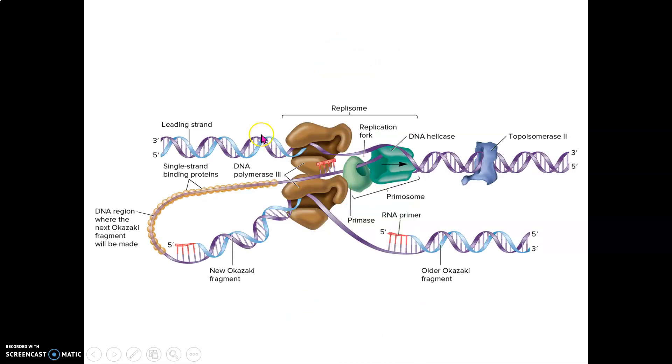Here's a more realistic view of what's going on. The helicase and primase are physically connected, allowing them to be more efficient. When you have primase and helicase together, it's called a primosome.